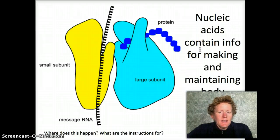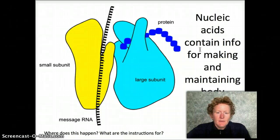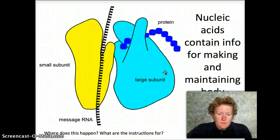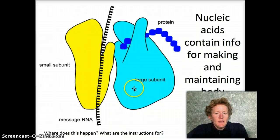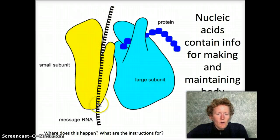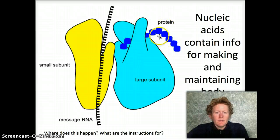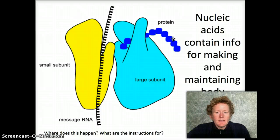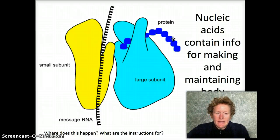Nucleic acids contain information for making those proteins, which make your body. So nucleic acids make protein. DNA makes RNA, which makes protein. That all happens in the ribosome — the RNA is the code telling the ribosome how to make the protein, and that protein makes up your body structure. So nucleic acids contain information for making and maintaining body structures.